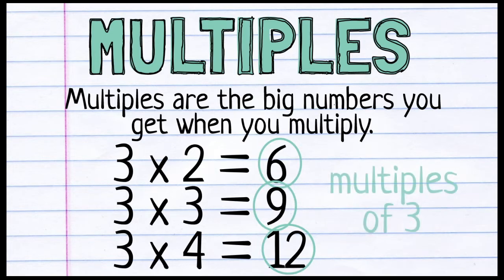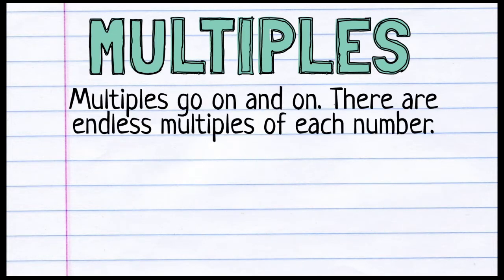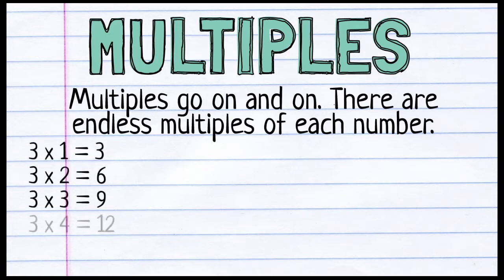These numbers, these are multiples of 3. When I multiply 3 by something, I get a multiple of 3. And multiples can go on and on. There are actually an endless number of multiples for each number. So when I multiply 3 by anything, I'm going to end up with a multiple of 3.